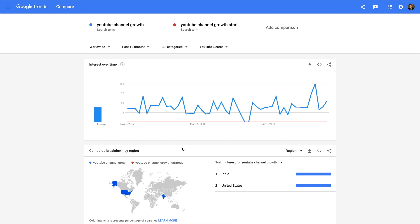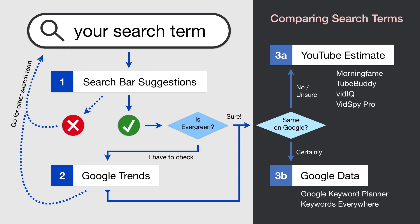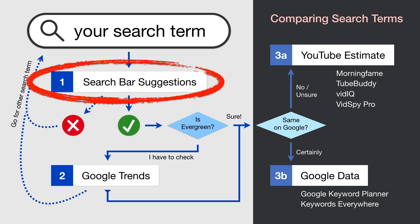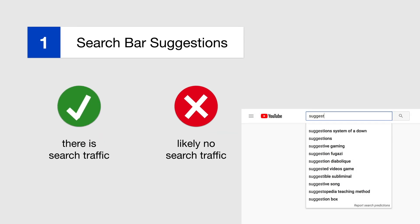Here you can see as well that the blue search term has a higher search volume. That's the three steps to find search volume on YouTube. But what is it about the search bar suggestions? Morningfame uses them automatically for you and shows a green check or a red cross. The green check means that the search term has a minimum amount of search traffic. If you get a red cross, it is likely that people are not searching for it — this is critical to know because you wouldn't want to optimize your video for a search term no one is using.